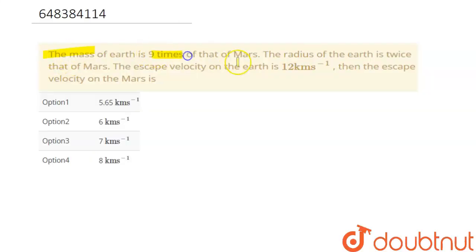of earth is nine times that of Mars. The radius of the earth is twice that of Mars. The escape velocity of earth is 12 kilometers per second, then the escape velocity for Mars is. Okay, so let's solve this.